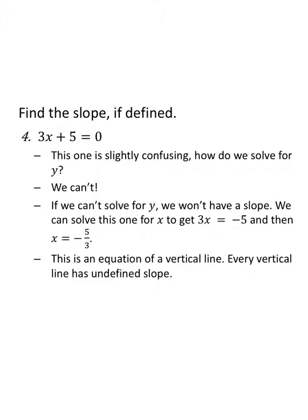Finding the slope of three x plus five equals zero. In the last three problems I said we find the slope m as the coefficient of x when we solve for y. But we can't solve for y here — there is no y. If we can't solve for y, we won't have a slope: the slope is undefined. We could solve for x — subtract five from both sides, divide by three — to get x equals negative five thirds. This is a vertical line, and every vertical line has undefined slope because the x value doesn't change, giving a zero in the denominator.